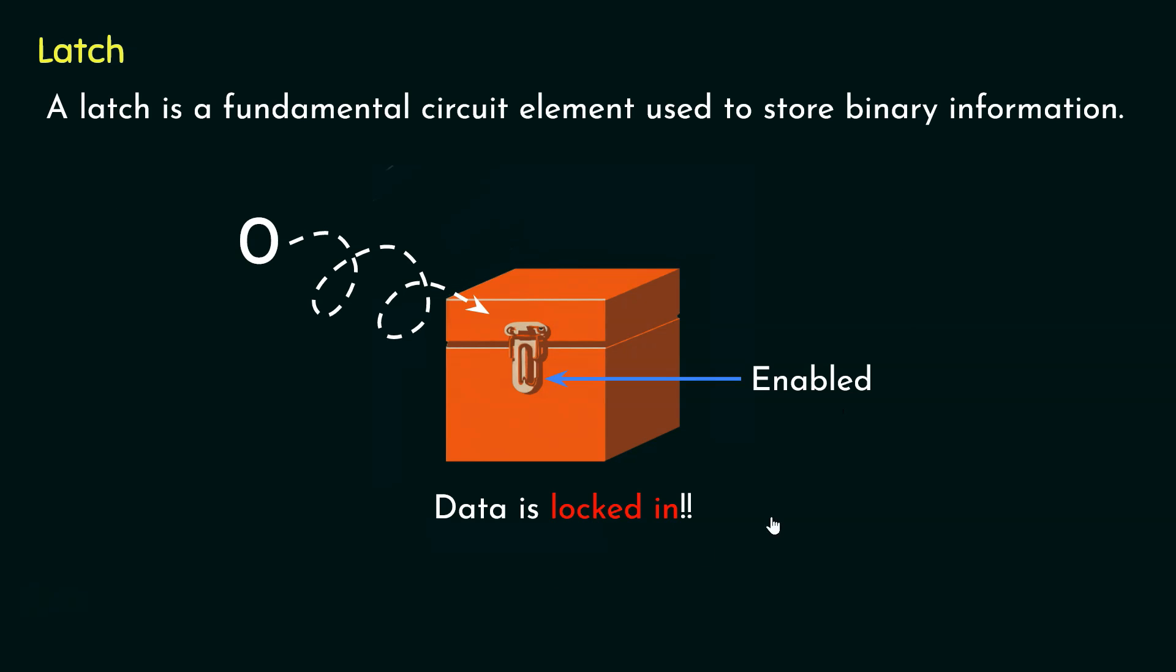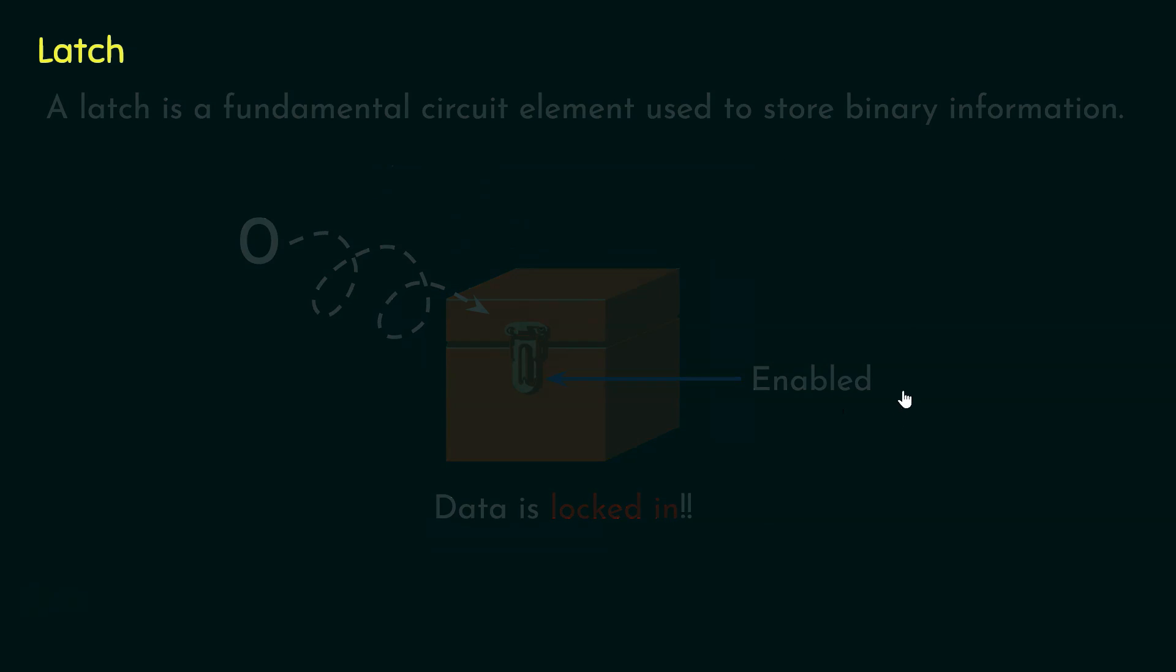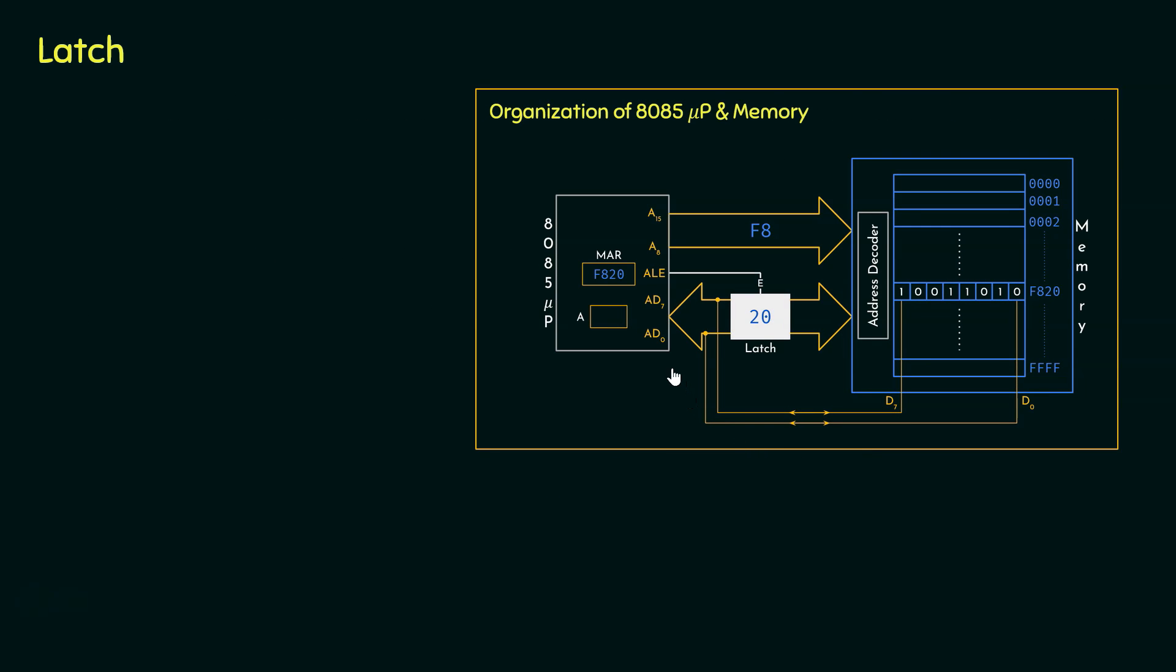So that's the basic concept of a latch. Now in 8085, if you remember, the ALE line is used to hold eight bits of data from the address lines AD7 to AD0 in an external latch. Now this latch which is controlled by the ALE pin is a transparent latch, that is it ensures that the address information remains stable during the time when the microprocessor is either accessing the memory or performing other operations.